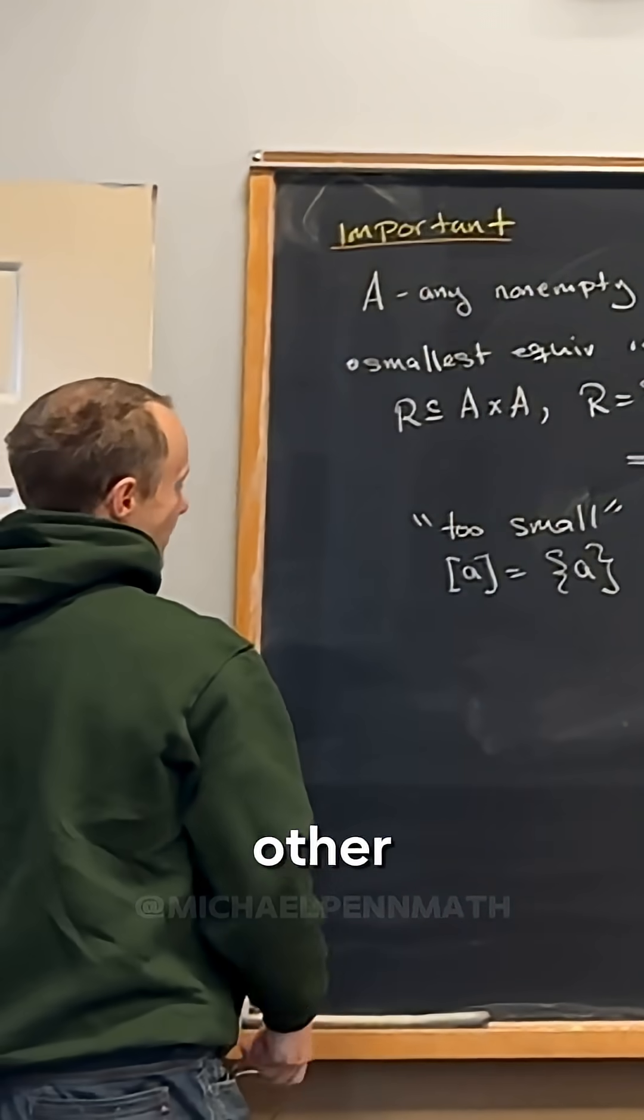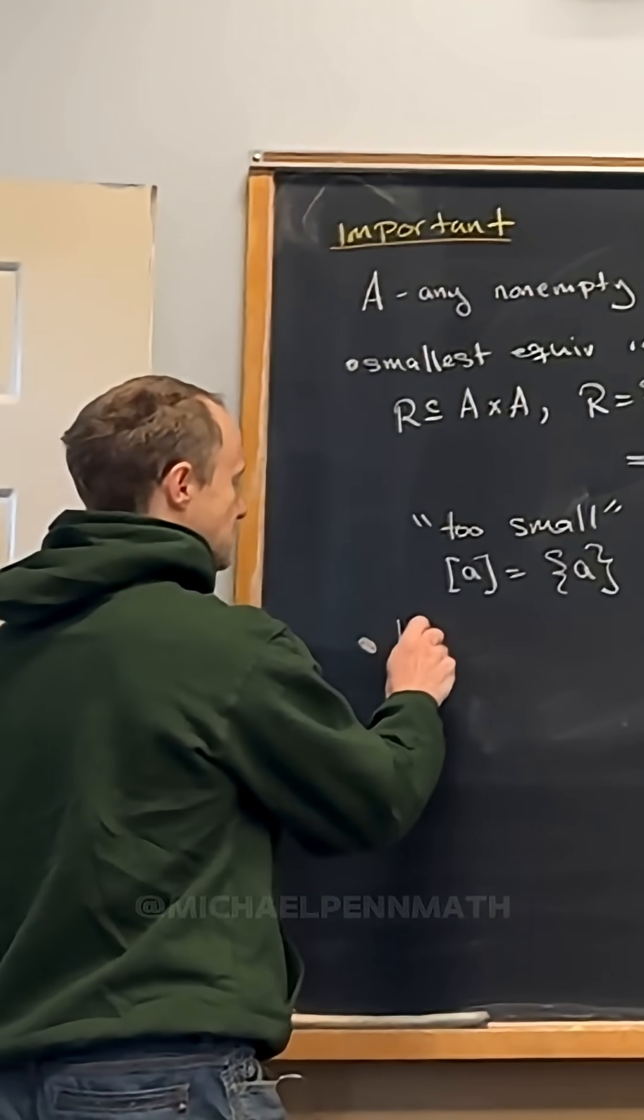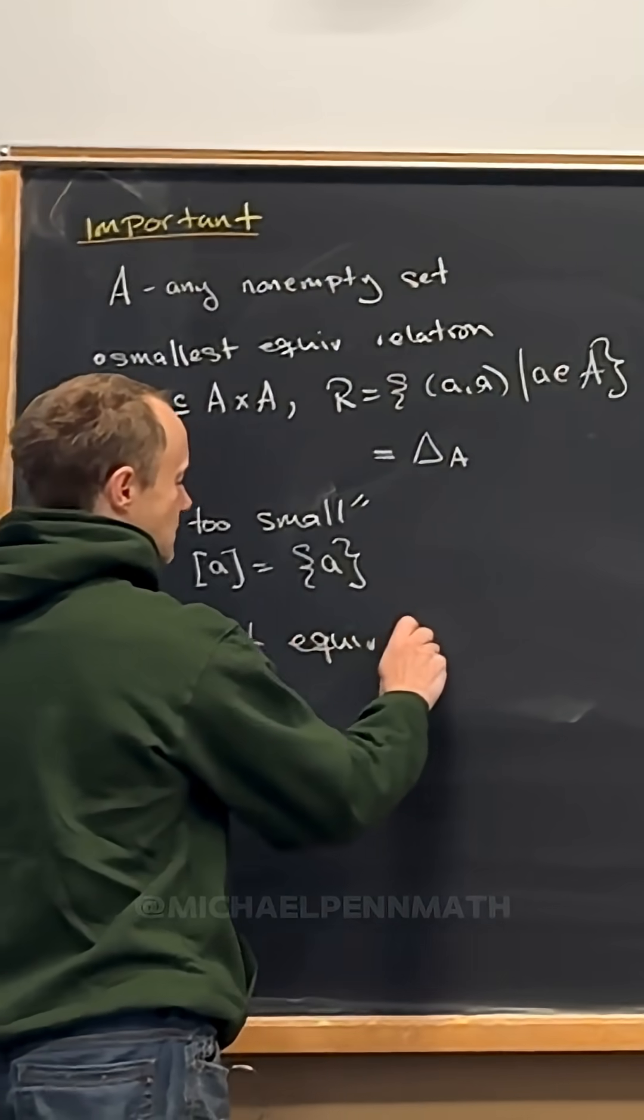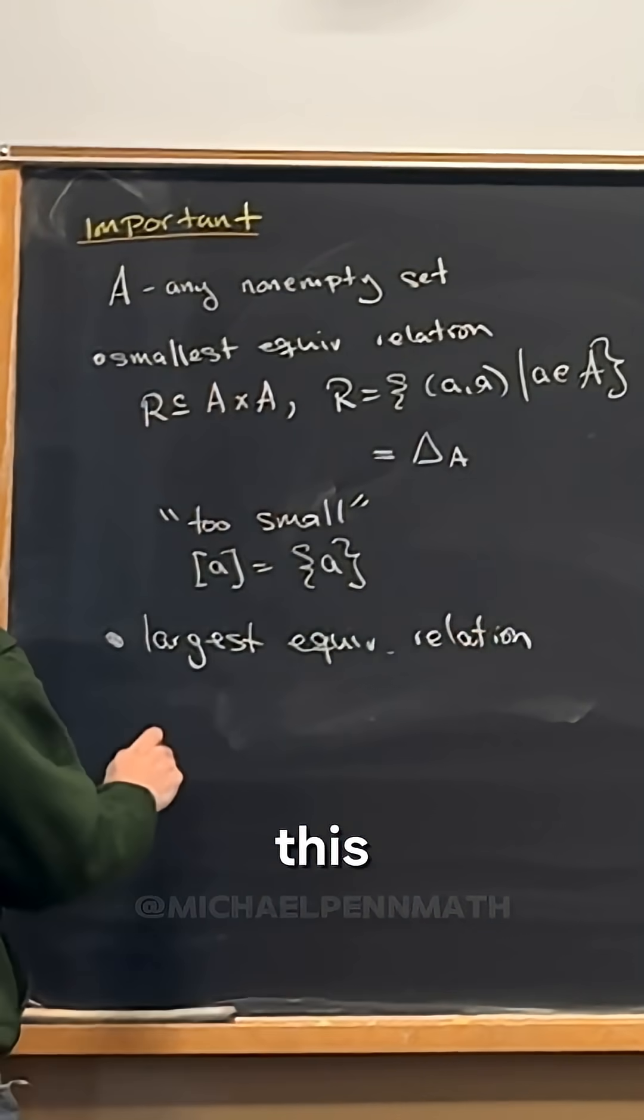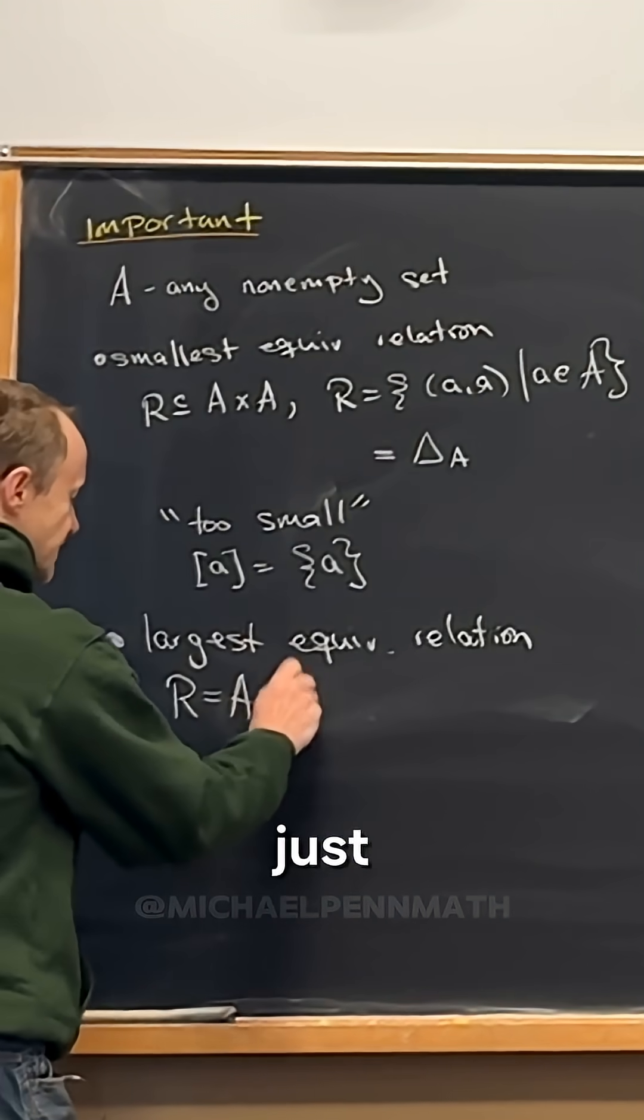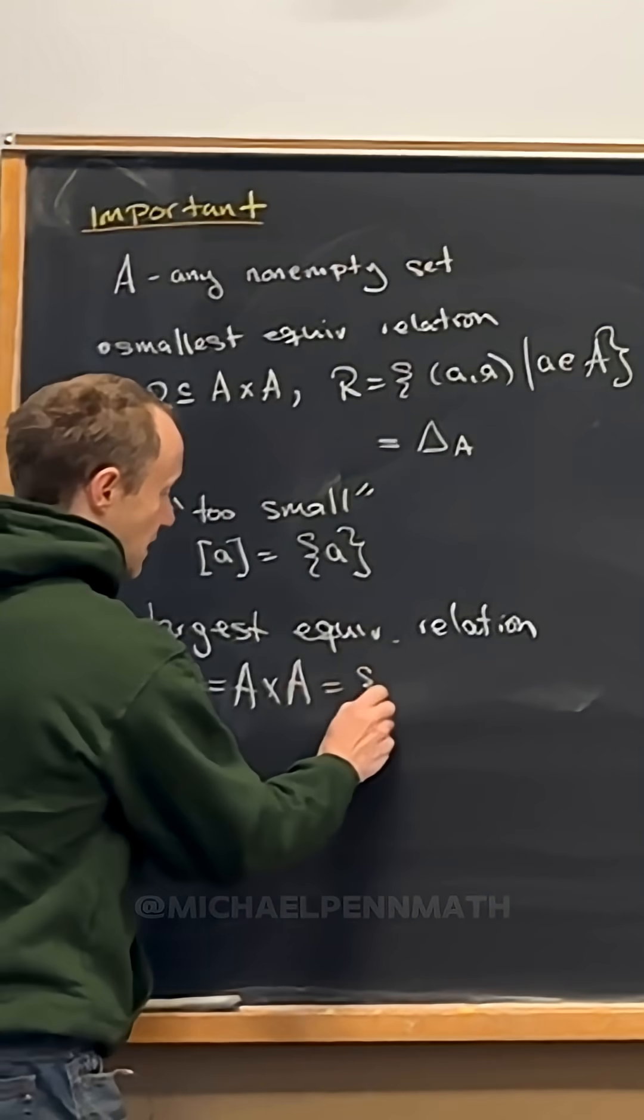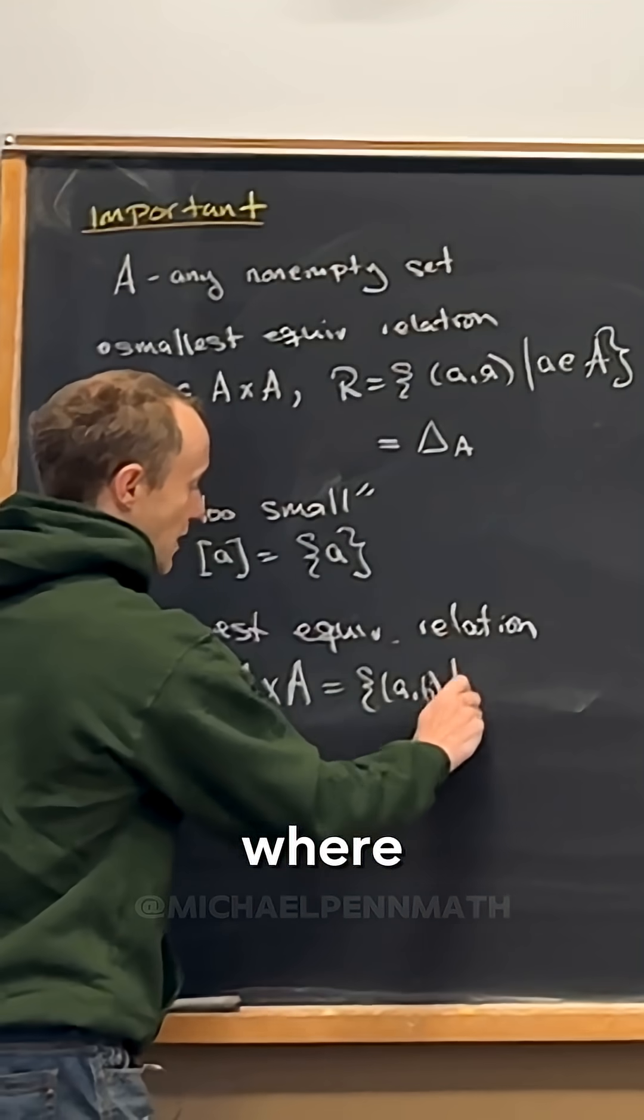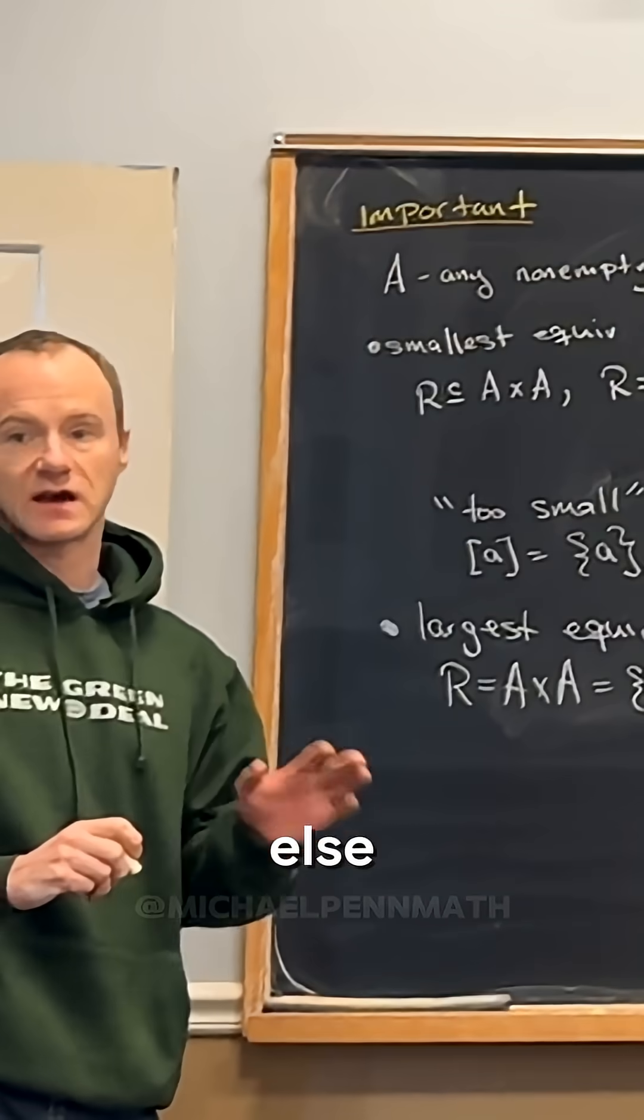So anyway, on the other end would be the largest equivalence relation. And in this case, the largest equivalence relation is just A cross A. So in other words, we would write this as (a,b) where a and b both come from A. So in other words, everything is equivalent to everything else.